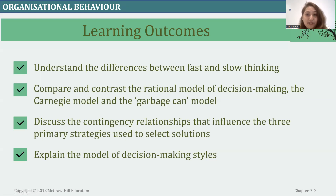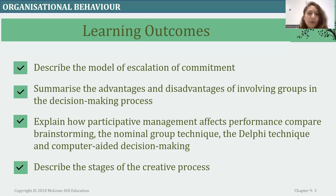Today we will be looking into the difference between fast and slow thinking. We will compare and contrast the rational model of decision making, and discuss the three primary strategies used to find selected solutions. We will explain the model of decision making style, the escalation of commitment model, and summarize the advantages and disadvantages of involving groups in decision making. We will also explain how participative management affects performance compared to brainstorming and normal grouping techniques, and look into the Delphi methods and computer-aided decision making, describing different stages of creative processes.